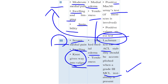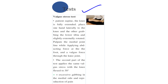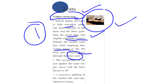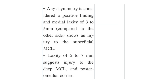The most common test for MCL injury in all grades is the valgus stress test. The patient lies supine with the knee fully extended. The physiotherapist places one hand laterally to the knee and the other grasps the lower tibia with slight external rotation, palpating the medial joint line while applying abduction force at the foot and valgus force through the knee. The test is also applied with the knee slightly flexed to 30 degrees. Pain or excessive medial gapping is a positive finding.